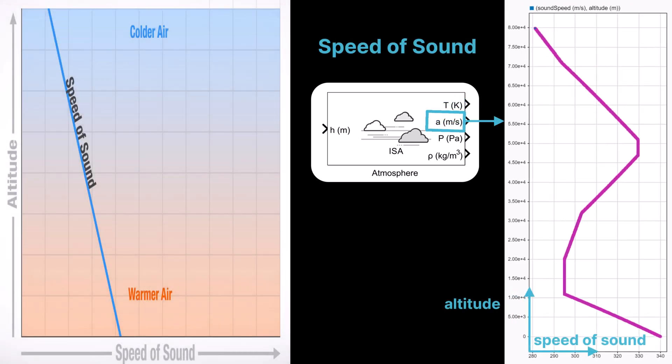The speed of sound generally decreases with altitude in the lower atmosphere due to decreasing temperature. In Simulink, the ISA atmosphere block can be used to generate the corresponding speed of sound versus altitude profile based on the international standard atmosphere model.